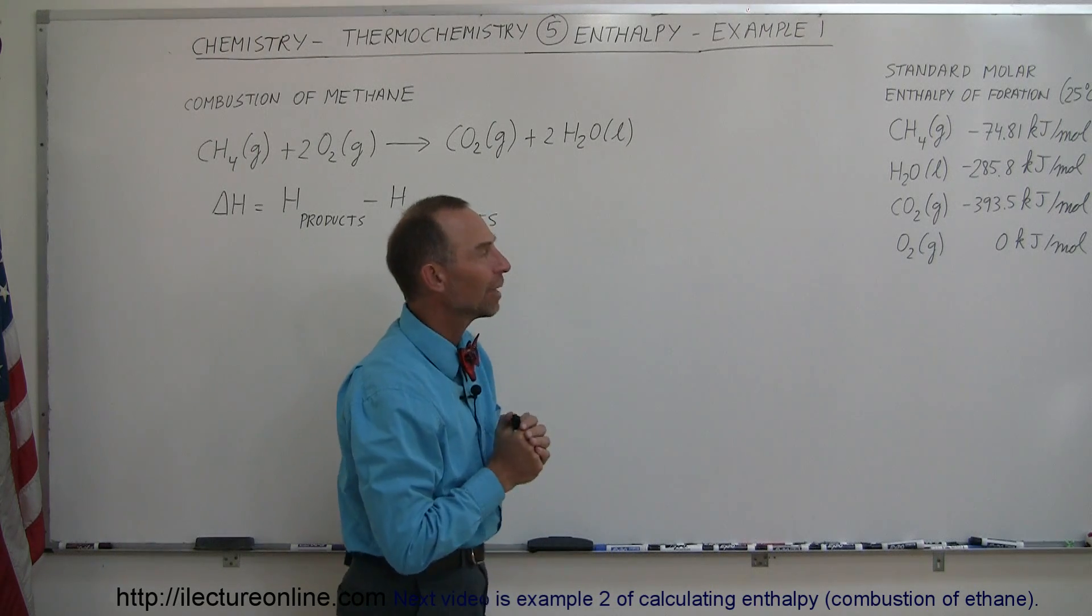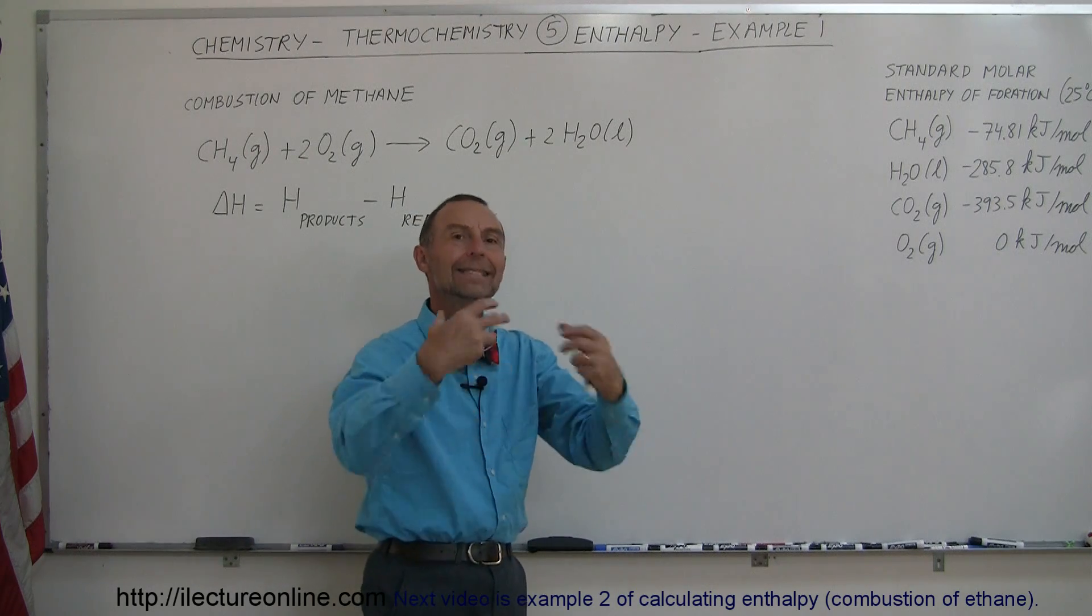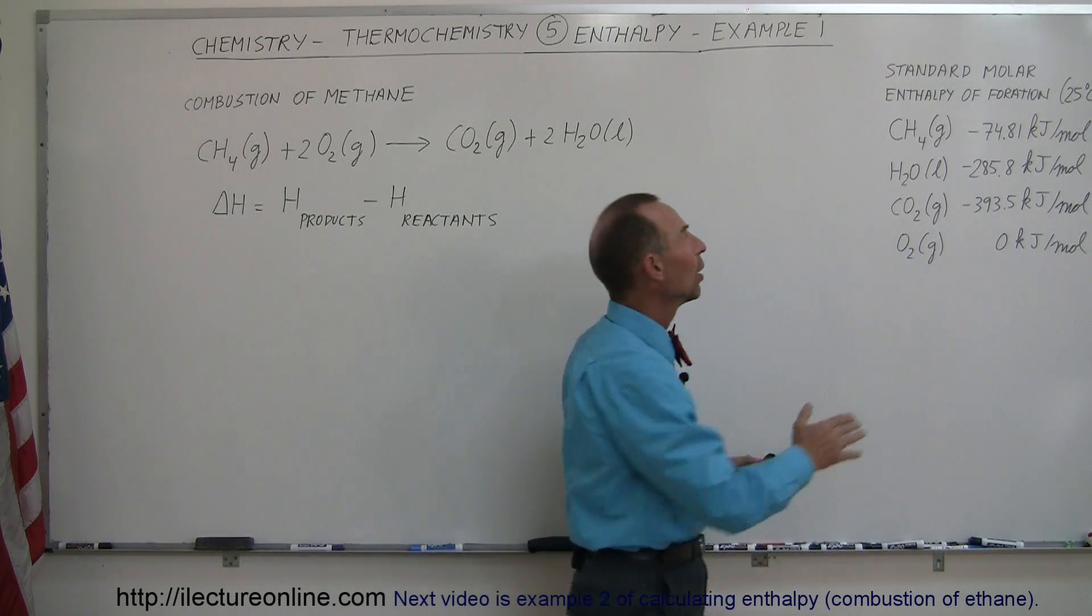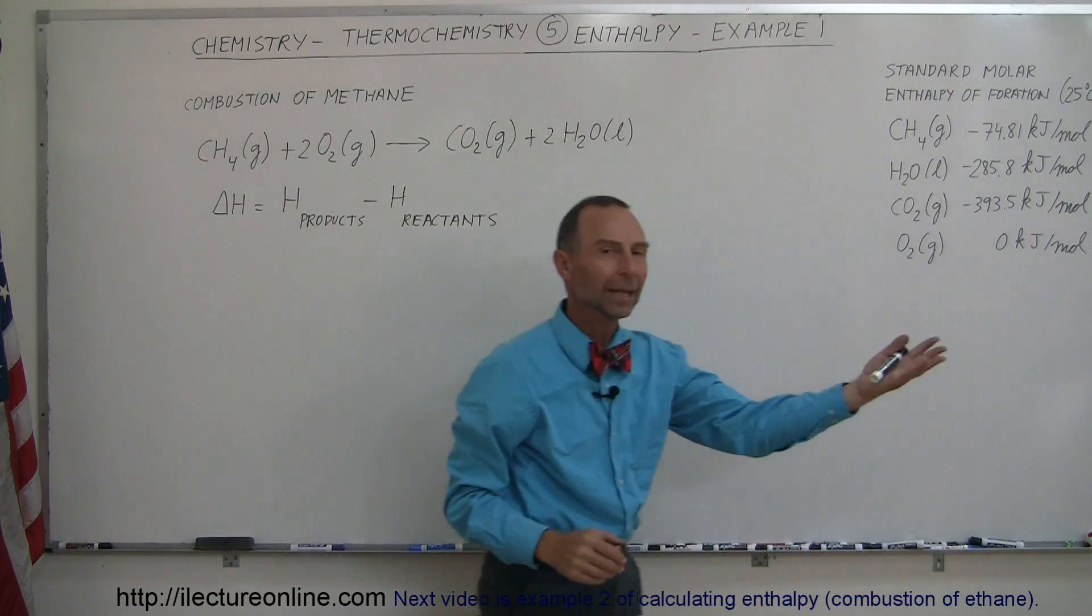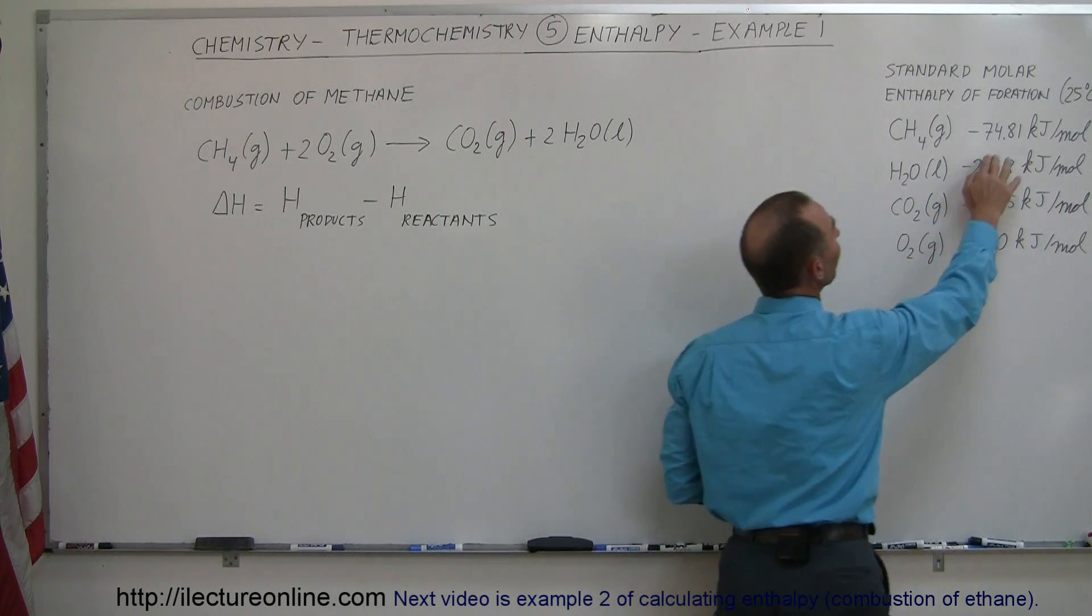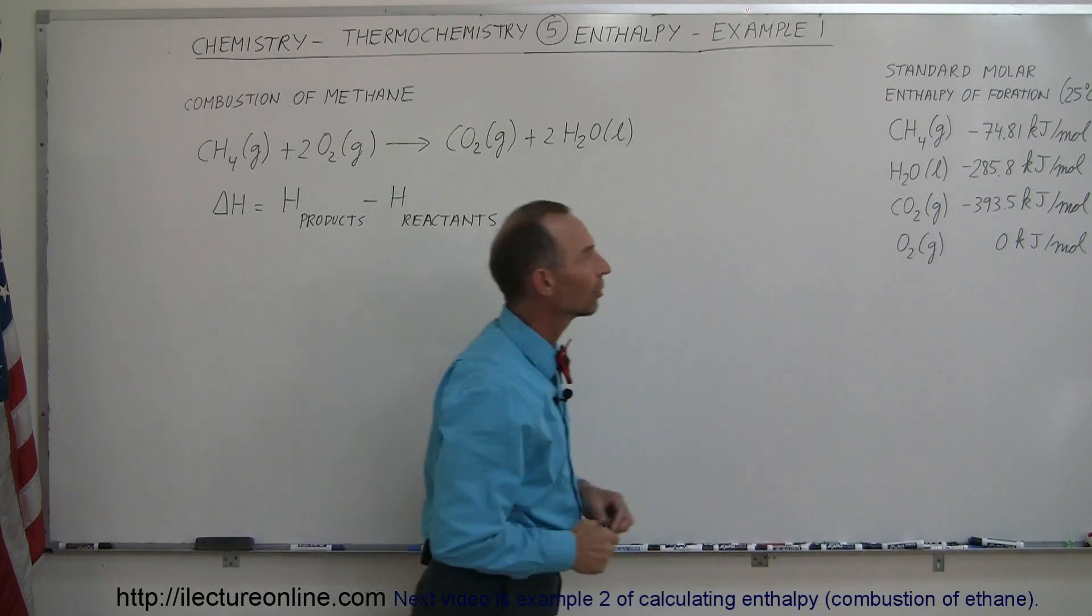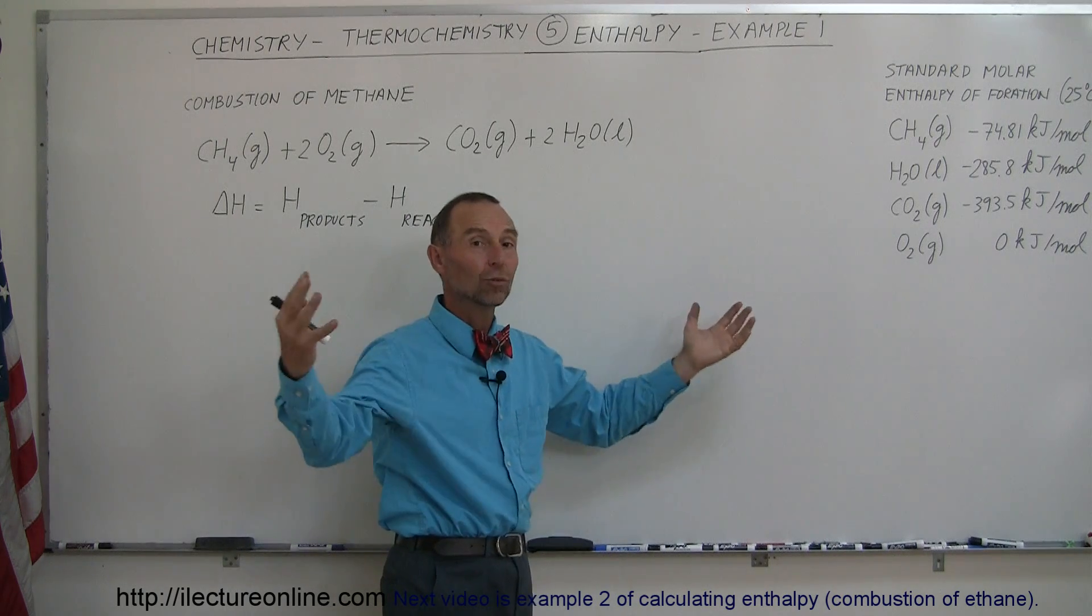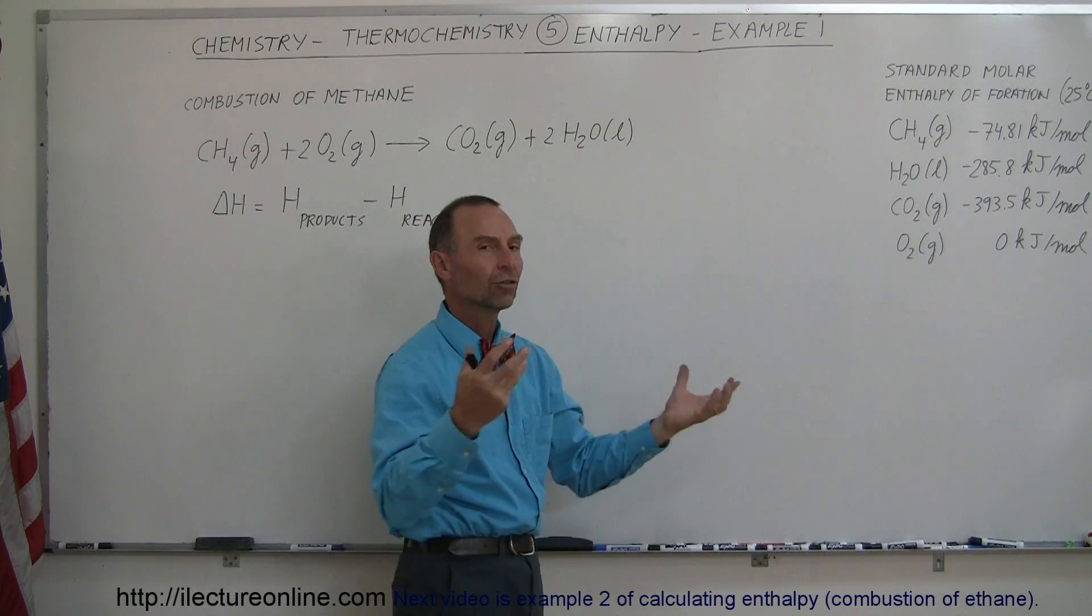So what is the enthalpy of formation? The amount of energy being freed or sometimes needing, it needs to be added in some cases, but since all these numbers are negative, this is the amount of energy that's given off when methane is formed from carbon and four hydrogen atoms. So if you take a carbon atom and four hydrogen atoms and put them together to form methane, you will release 74.81 kilojoules per mole of material. So the negative means it's given off, it's therefore exothermic.